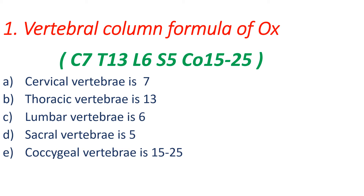Now we will discuss the vertebral formula of ox — that is, how many of each type of vertebrae are present in ox. The number of vertebrae differs in all animals. In the case of ox: C7, T13, L6, S5, and coccygeal 15 to 25. That means cervical vertebrae number is 7, thoracic is 13, lumbar is 6, sacral is 5, and coccygeal vertebrae vary from 15 to 25.